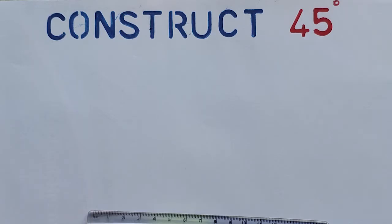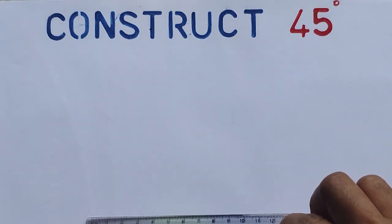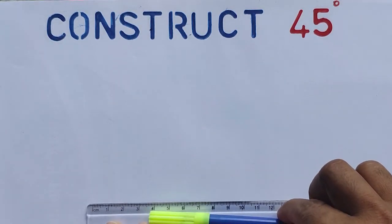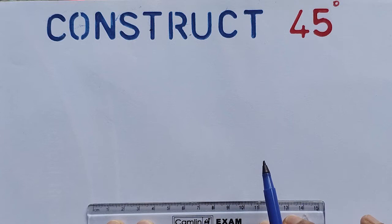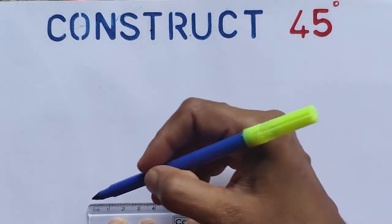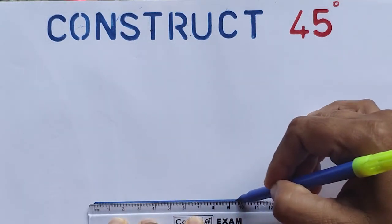Hi students, in this video we will discuss how to construct 45 degrees using a compass. For that, we must recall how to construct 90 degrees and how to bisect an angle. If we bisect 90 degrees, we will get 45 degrees. So let's first draw 90 degrees, then we will bisect it.